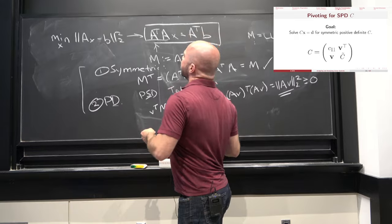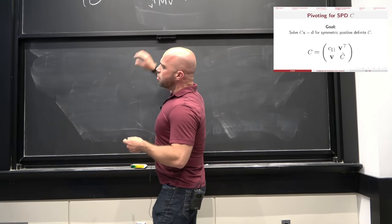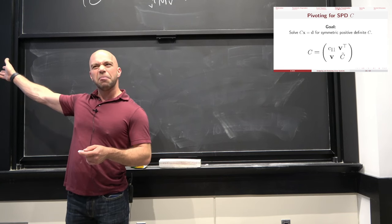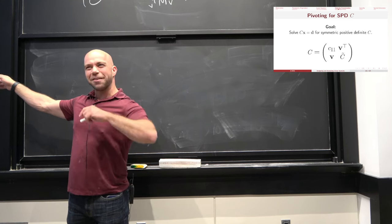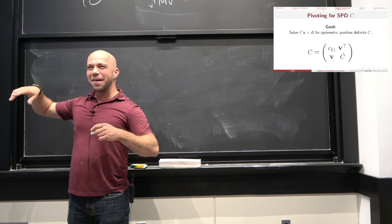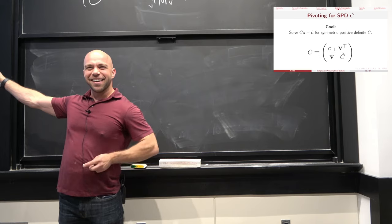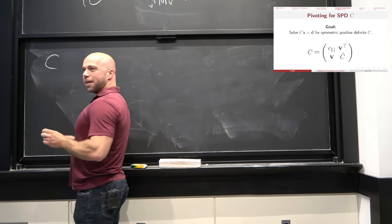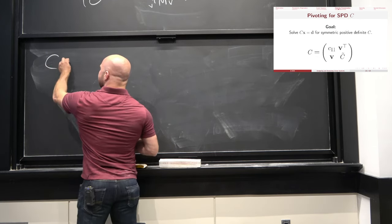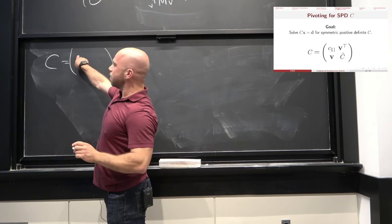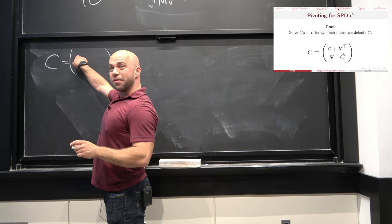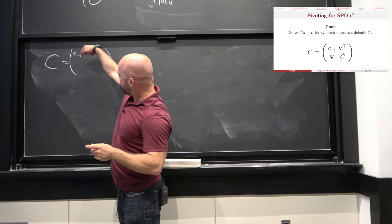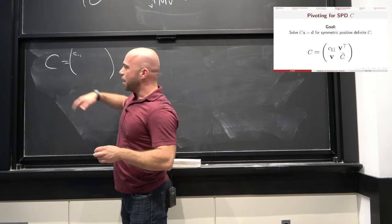To avoid confusion between A^T A and A, let's switch to a matrix C. We're trying to solve Cx = d. What we'd like to do is apply some version of Gaussian elimination or LU factorization to C, but our eventual goal is to try to preserve the symmetry and positive definite structure that we like in C. I'm going to take a big matrix C and think of it in block form: the upper-left element C₁₁ is a scalar, the rest of the first column is a vector v (of size n-1), and by symmetry, the first row is v^T.